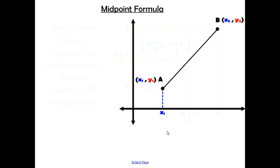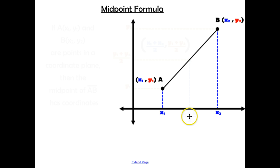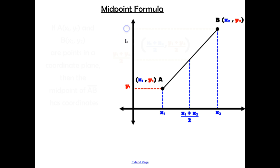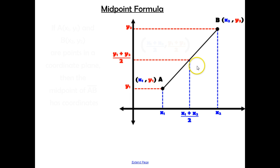First let's focus on the x coordinates. When you take the x coordinate of point A and the x coordinate of point B, the way to find the middle between those is the same way you would average two numbers — you add them and divide by 2. That gives you the exact middle between those two x values. We take that same idea with the y coordinates: add the y coordinate of A and B, divide by 2, to find the exact middle. Those two will line up to a point, and that is your midpoint.